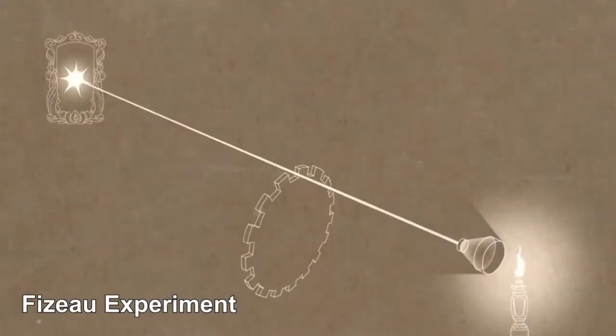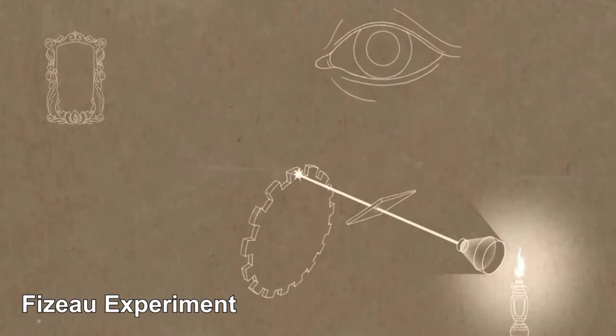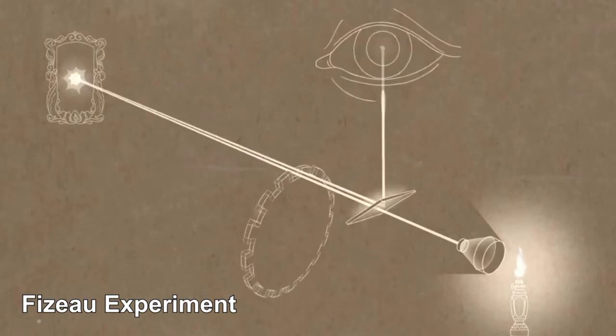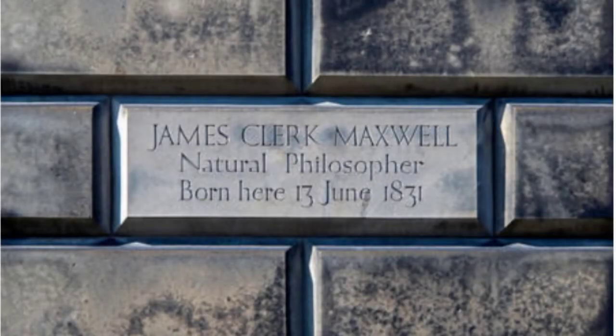So, how does someone come up with a crazy notion that no matter how fast I drive my car in this direction, you will measure the speed of light to be the same? Well, to understand this, we need to go back a few years to a bloke named James Clerk Maxwell.